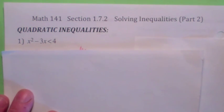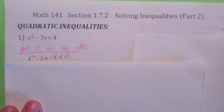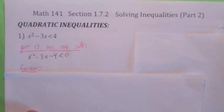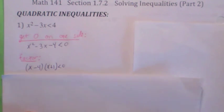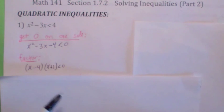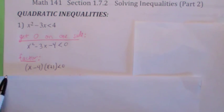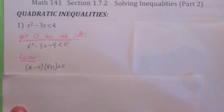Algebraically, what we're going to do is get zero on one side, and then we're going to factor. The reason why we're doing that is because we're asking: when is the product of two things less than zero? The product of two things being less than zero — wouldn't they have to have different signs? Wouldn't one have to be negative and the other one positive? So we're asking what circumstances would give one factor positive and one factor negative.